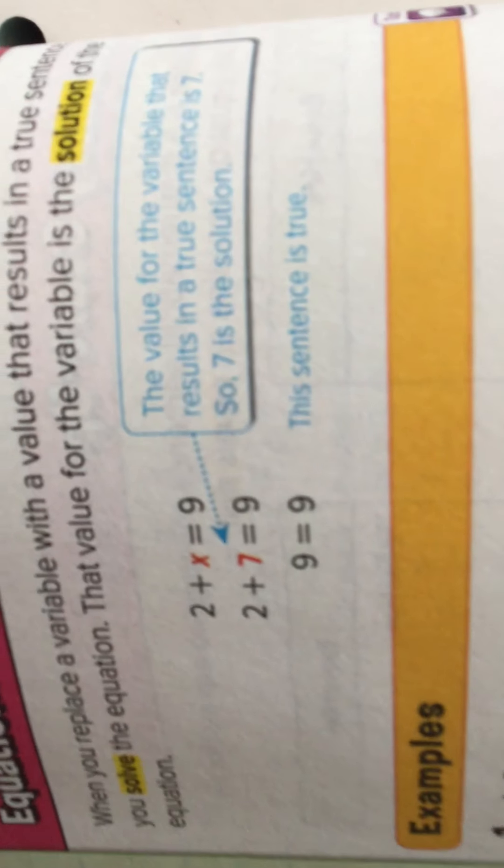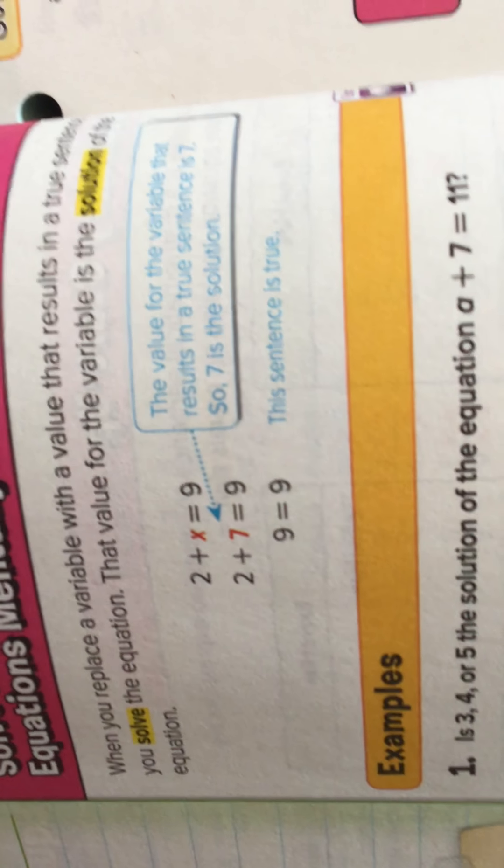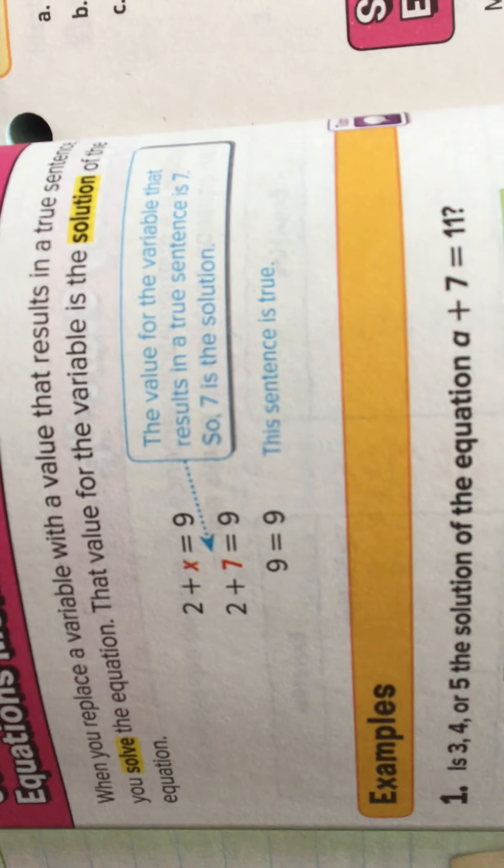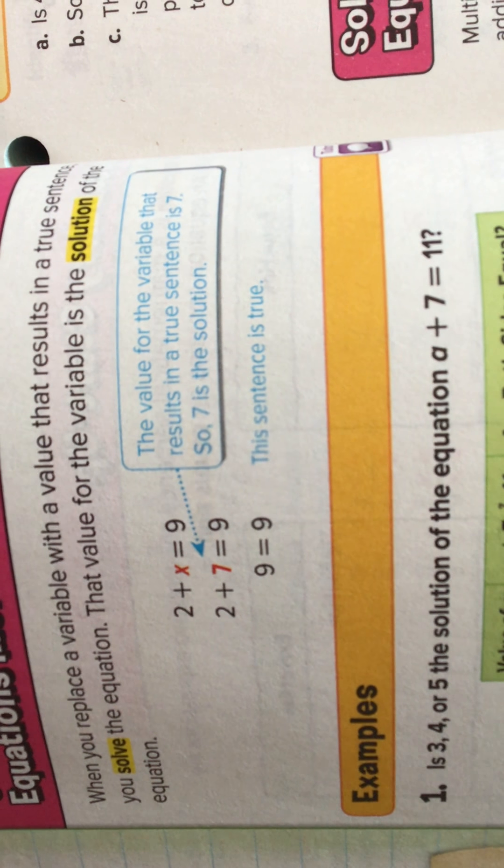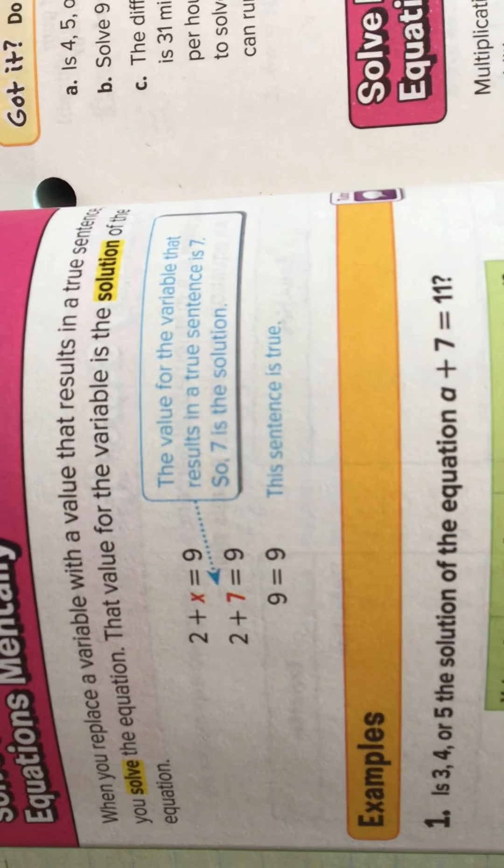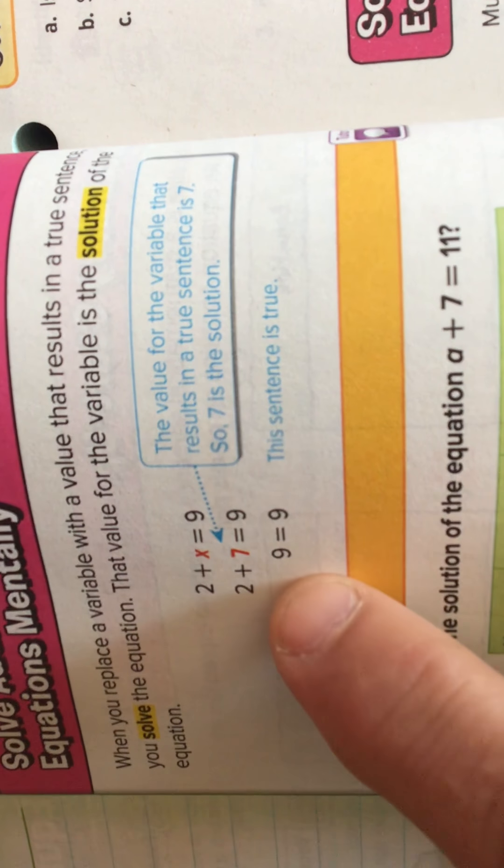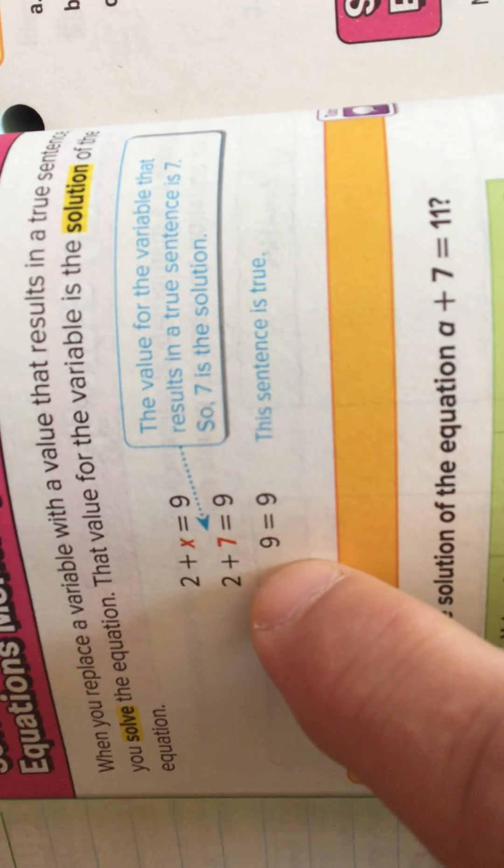So, for example, 2 plus x equals 9. The value for the variable that results in a true sentence is 7. So, 7 is the solution. If you add 2 plus 7, you get 9. And 9 equals 9. So, the sentence is true.